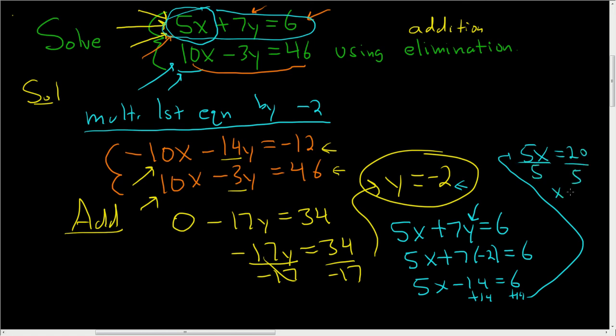And you get x equals 4. So the final answer should always be written as an ordered pair. So the answer will be in the form x comma y. So x will come first. So 4 and then y, which was negative 2. That's it. I hope this has helped someone out there.